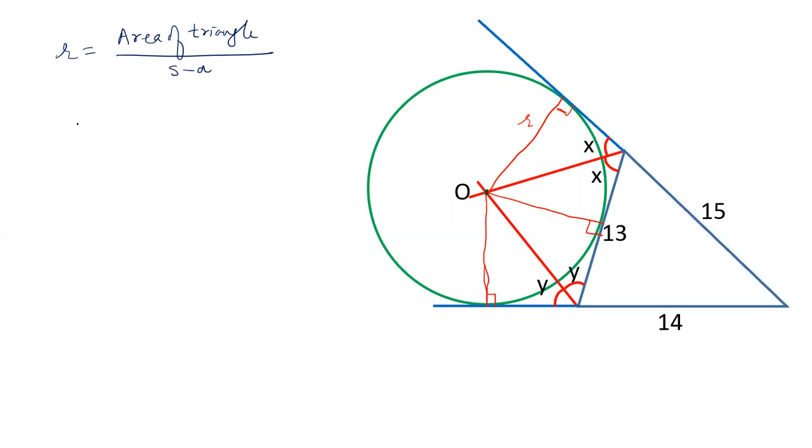So we have to calculate the area of triangle. The sides of the triangle are 13, 14 and 15. So the value of S will be A plus B plus C by 2, which is 13 plus 14 plus 15, that equals 42 by 2. So the value of S is 21.